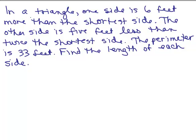We're going to do this geometry problem that has to do with perimeter. In a triangle, one side is 6 feet more than the shortest side. The other side is 5 feet less than twice the shortest side and the perimeter is 33 feet. Find the length of each side.